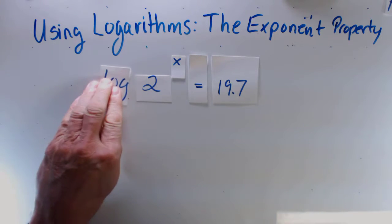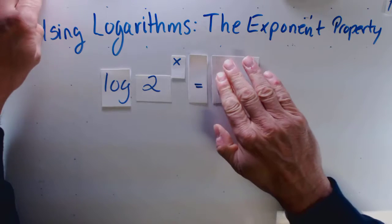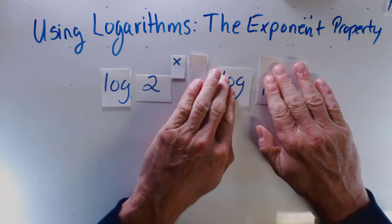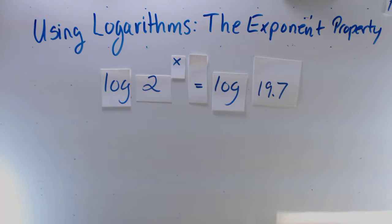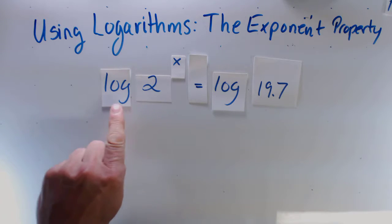We're going to start by taking the log of both sides of this expression. Since the expressions are equal, the logs are equal, and we know by our exponent property that the log base 10,